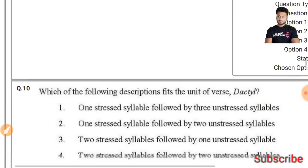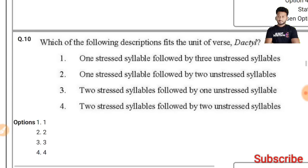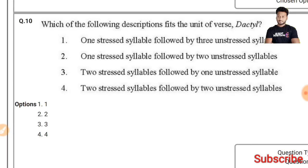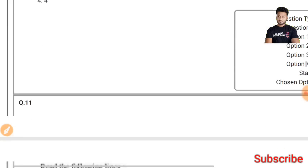Question 10: Which of the following descriptions fits the metrical unit of a dactyl? A dactyl consists of one stressed syllable followed by two unstressed syllables — the first option is the right answer.